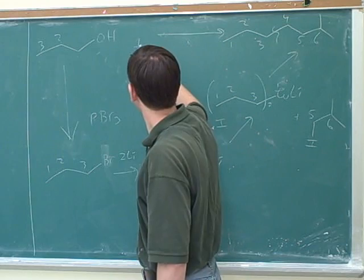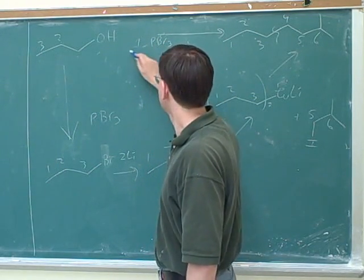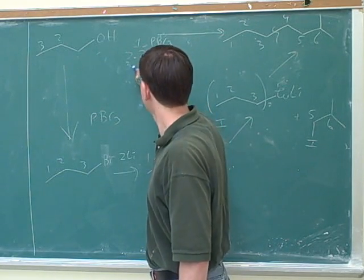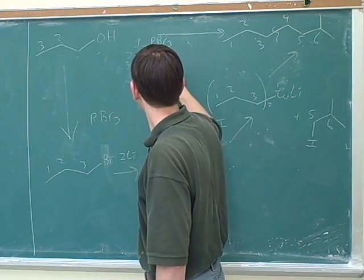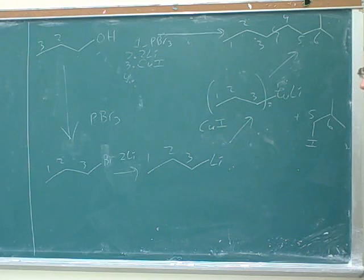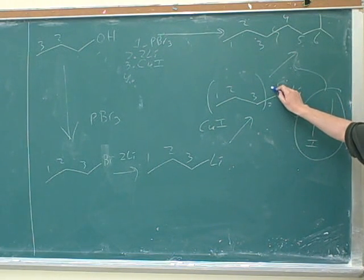Step one is PBR3. Step two is 2Li. Step three is CuI. And step four is that thing on the right. Then we add this thing to the copper lithium.